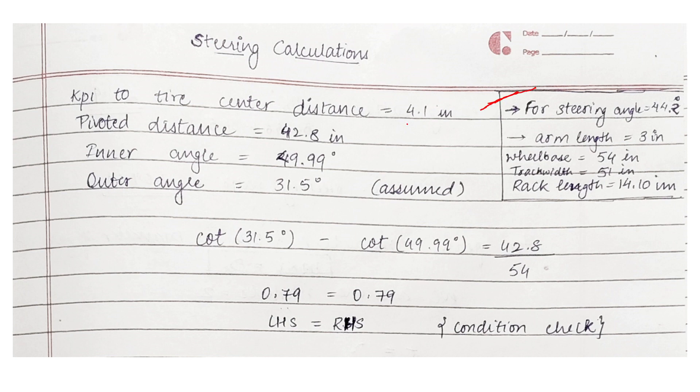We have taken the KPI distance from the tire center to be 4.1 inches. So the pivoted distance, that is the distance between the two kingpin axes, this is the distance between the two points where the tie rods are attached, comes out to be 42.18 inches. That is the track width minus 2 times the KPI distance.